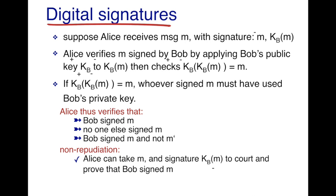Alice can verify that Bob signed it and nobody else, because Bob's private key is only known to Bob. More importantly, she also knows that Bob signed this message M and not some other message M', because the decrypted message and the original plaintext have come out to be the same. This is very useful because Alice can take this message M and the signature KB(M) to court and prove that Bob originally signed the document.